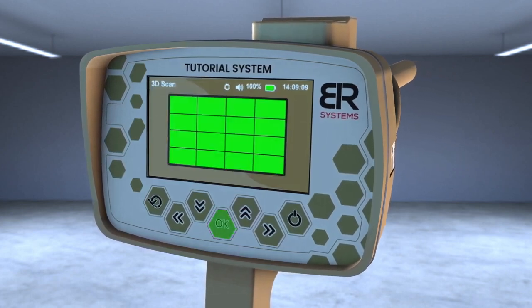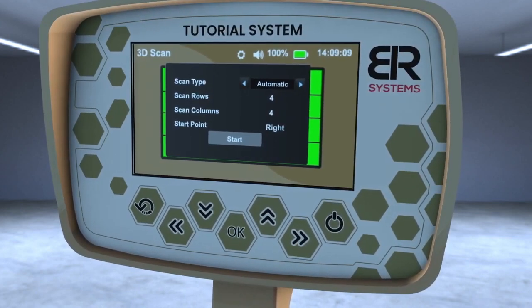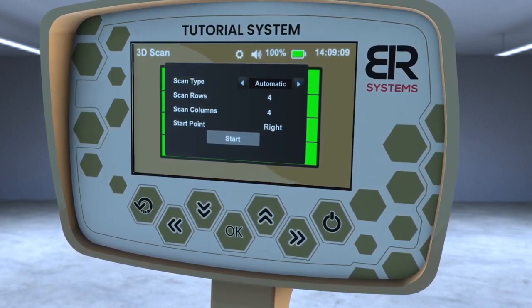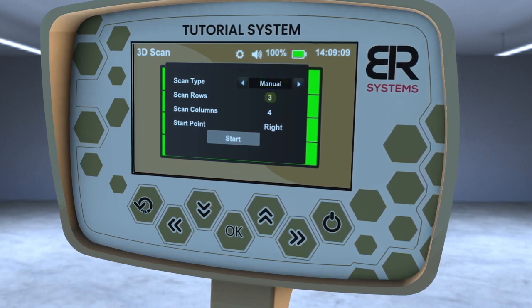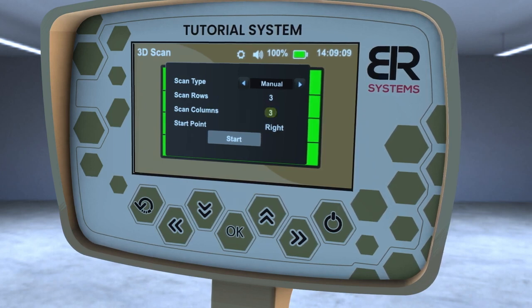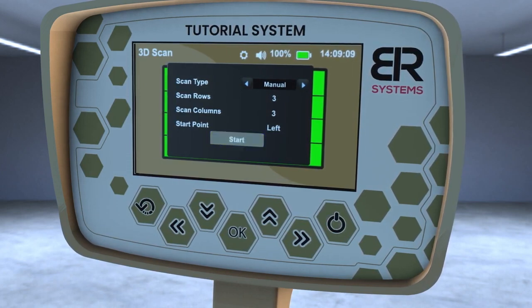When you press OK, a menu will appear for choosing the type of scanning and selecting its method. In the case of the manual scan, choose 3 for the number of lines and 3 for the number of columns. Choose the starting point from the left and click the Start icon.